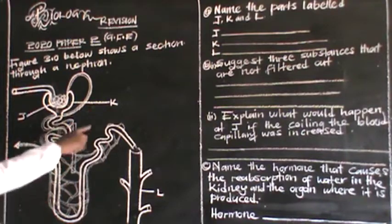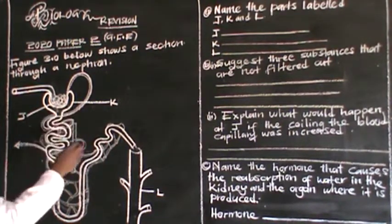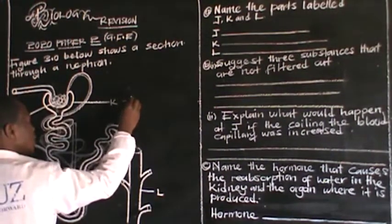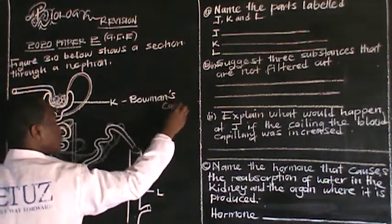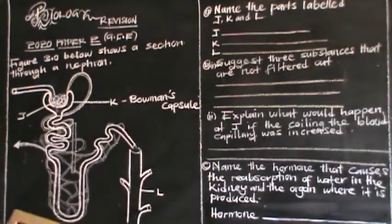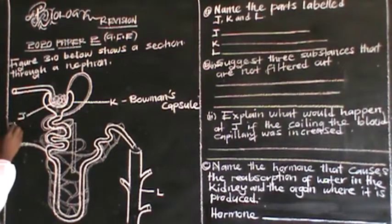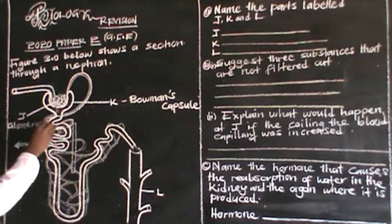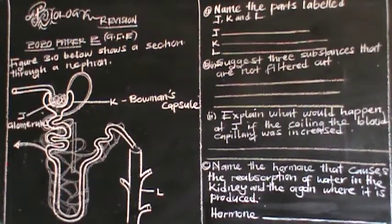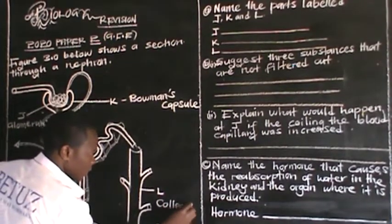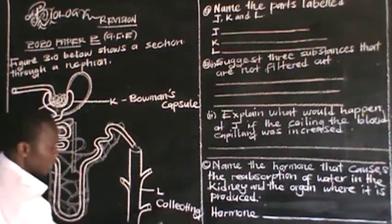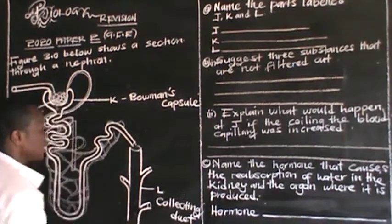Part K represents the Bowman's capsule. That is K. Then J — this one represents the glomerulus. Then L, this one represents the collecting duct, where the reabsorption of water is done.